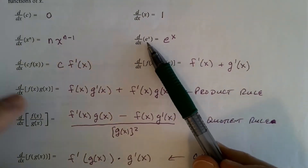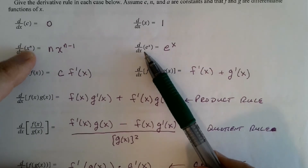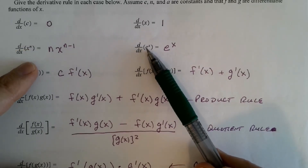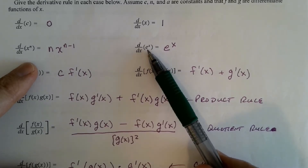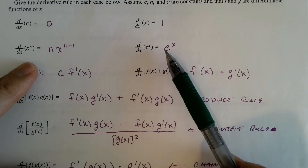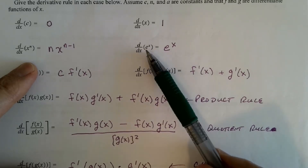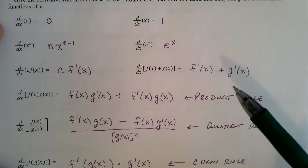The derivative of e to the x — now this is not the power rule. In the power rule, the base is variable x and the exponent is fixed, N. For e to the x, this is the natural exponential function. The base is fixed; e is about 2.718, and the exponent is now variable. The derivative of e to the x is e to the x — one of the functions whose derivative is itself. So the slope of e to the x at any point x equals the value of the function, e to the x.